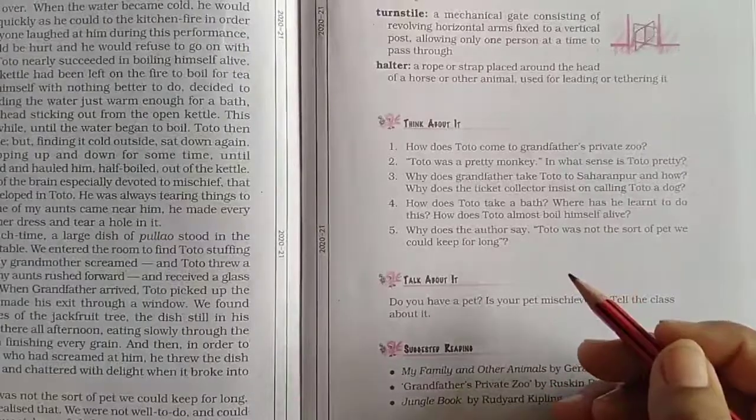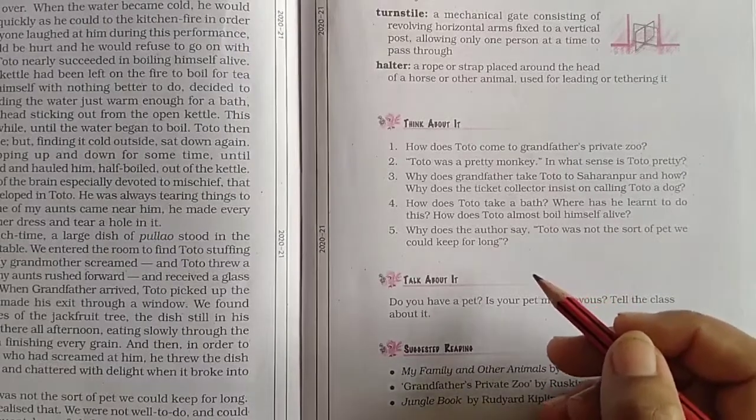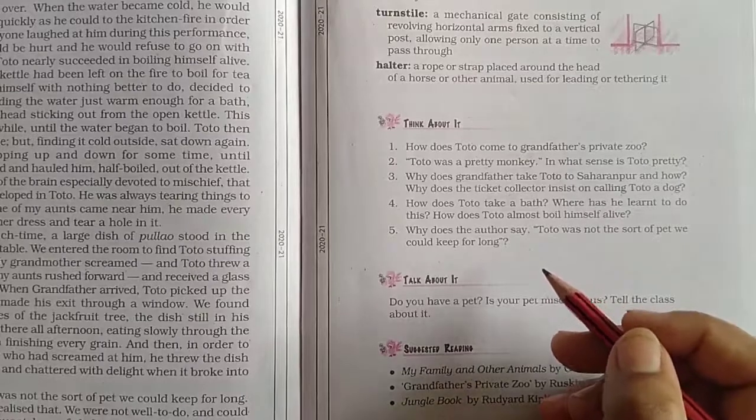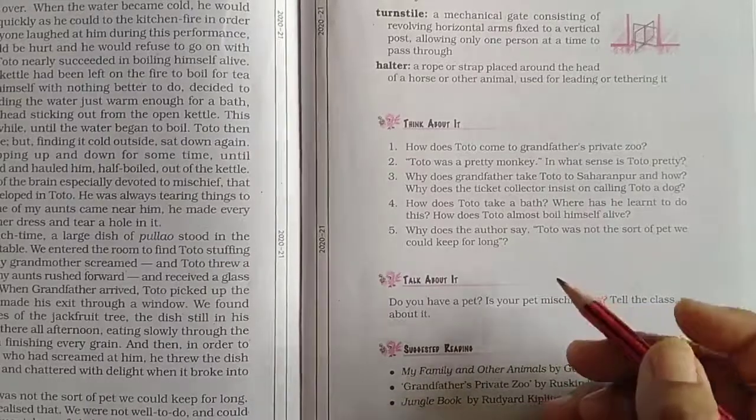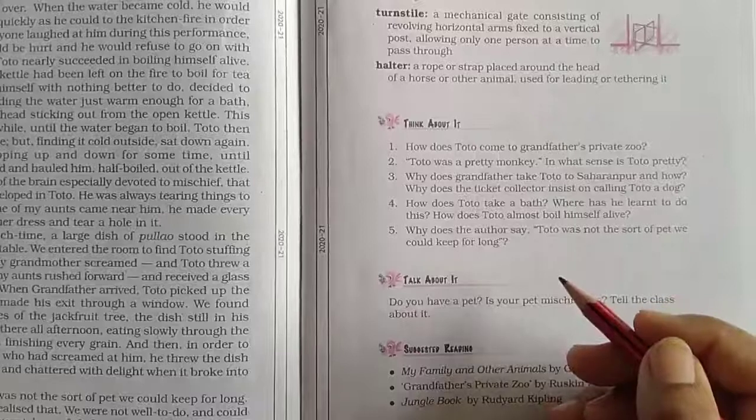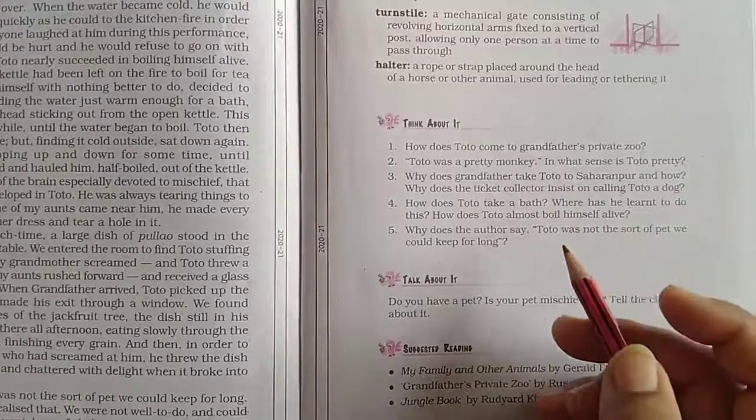The ticket collector was taken aback but soon regained his composure. He was annoyed and classified Toto as a dog. Grandfather had to pay fare for Toto's journey too.